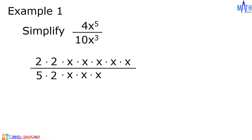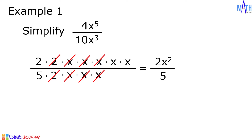Next step, let us cancel out the common factors. Cancel out 2, x, x, x, and x. In the numerator, we are left with 2 times x times x, and that is equal to 2x squared. In the denominator, we are left with 5. So 2x squared over 5 is the simplified form of 4x raised to 5 over 10x cubed.